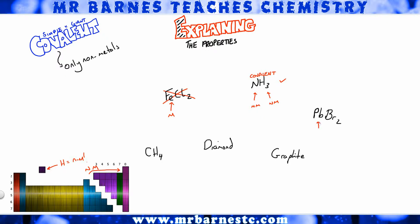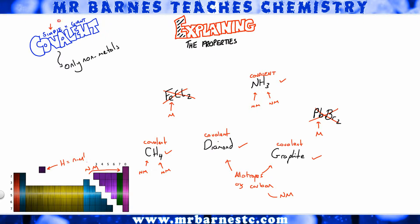PbBr2: Pb is a metal, so it's not covalent. CH4: carbon is a non-metal, hydrogen is a non-metal, so that's a covalent compound. Diamond and graphite are both allotropes of carbon — different structures but made up of carbon, which is a non-metal, so they are both covalent. Now, how do we work out whether we've got simple or giant covalent?